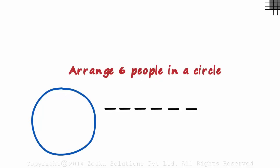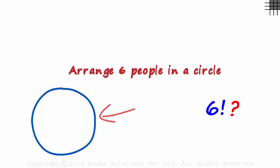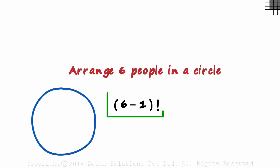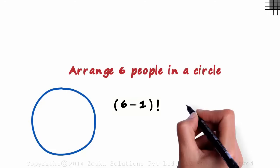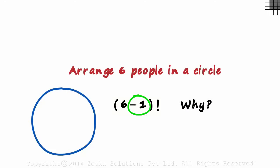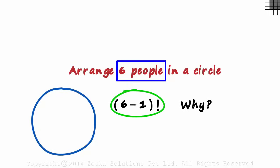If we had to arrange them in a row, we know that it can be done in six factorial ways. Will it be the same if they have to be seated in a circular fashion? Most of us know the answer — it will not be the same. It's six minus one factorial. But why do we subtract one? This is exactly what most don't know, and most of us won't even try to understand it. Because it's a simple formula: n people around a circular table can be arranged in n minus one factorial ways.